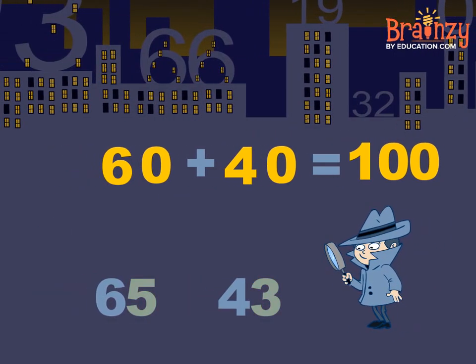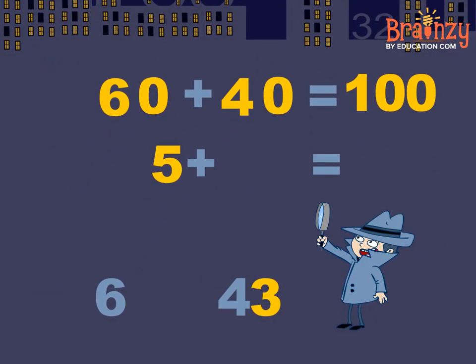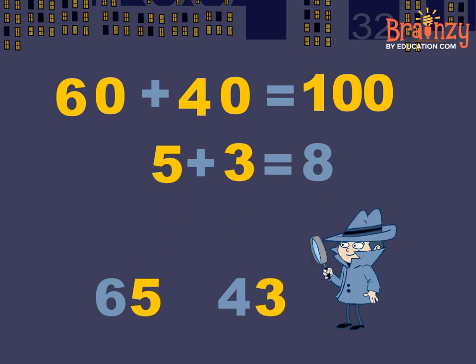Now add up the ones column, it's 5 plus 3. Now the problem gets simpler.